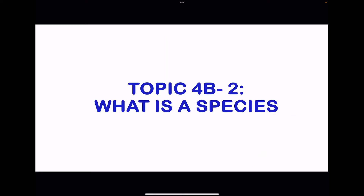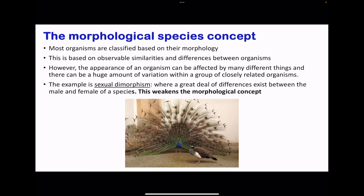Moving on to topic 4b2: What is a species? Species can be categorized based on their outside appearance — this is the morphological concept. Organisms are classified based on morphology or how they look; observable similarities and differences are used. However, because appearance can be affected by various things, variations can occur even among closely related organisms. For example, the peahen and the peacock are the same species, but due to sexual dimorphism they appear to have great morphological differences and could be misclassified as different species. So sexual dimorphism weakens the morphological concept.